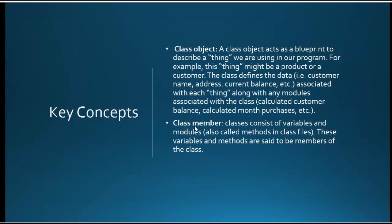Each class has members. The members consist of variables and modules, which we've also called functions. But when a module is owned by a class member, it's called a method. They're all three the same — modules, functions, and methods are all the same. The only thing that makes them different is where they exist. A module is for pseudocode. A function is for most programming languages when it's not part of a class. But if a function is part of a class, it becomes a method — and that's a vocabulary thing true of any programming language.